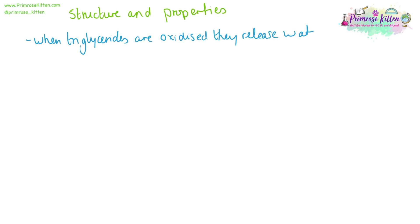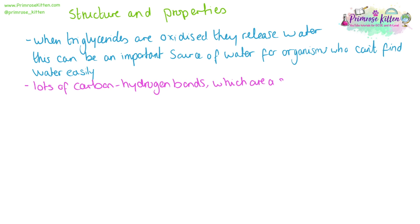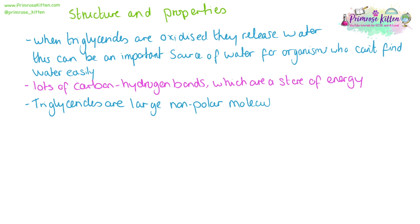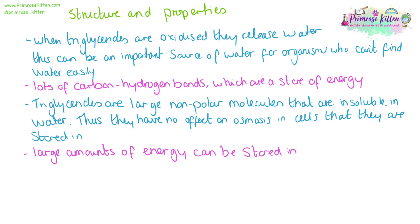You need to be aware of the structure and the properties of triglycerides. When triglycerides are oxidised, they release water, which can be an important source of water for organisms where water isn't readily available. They have lots of carbon-hydrogen bonds, which are an important store of energy. Triglycerides are large non-polar molecules that are insoluble in water, and thus they're going to have no effect on osmosis in cells. Large amounts of energy can be stored in a small volume of triglycerides compared to carbohydrates.